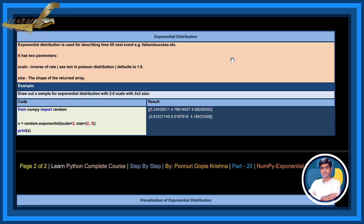It has two parameters. Scale, inverse of rate. See, I am in Poisson distribution. Defaults to 1.0. Size, the shape of the written array.